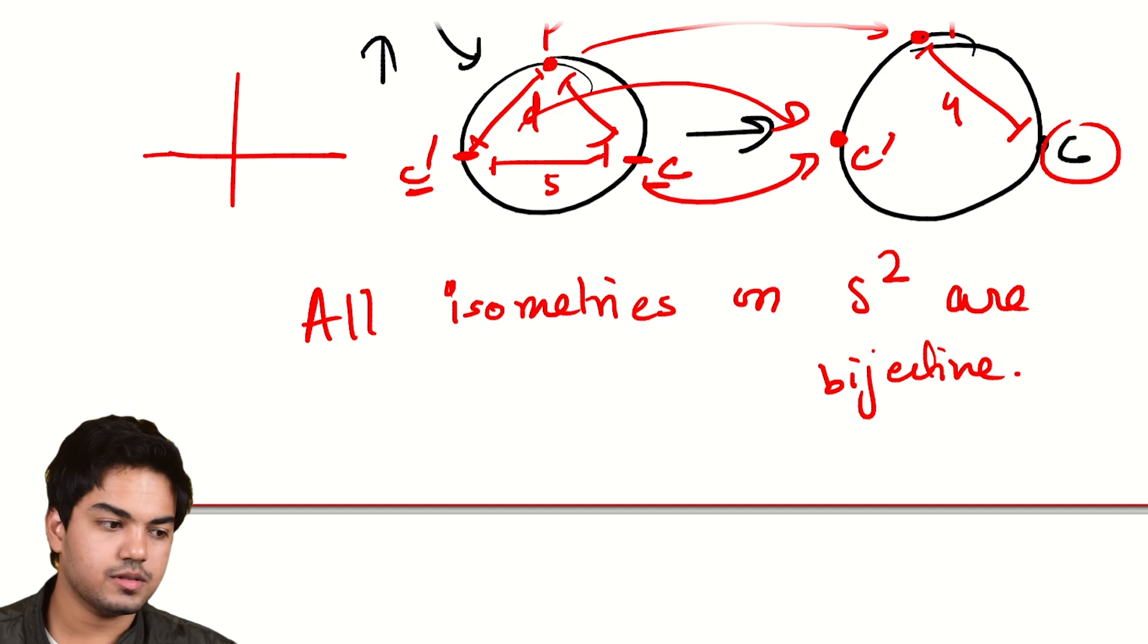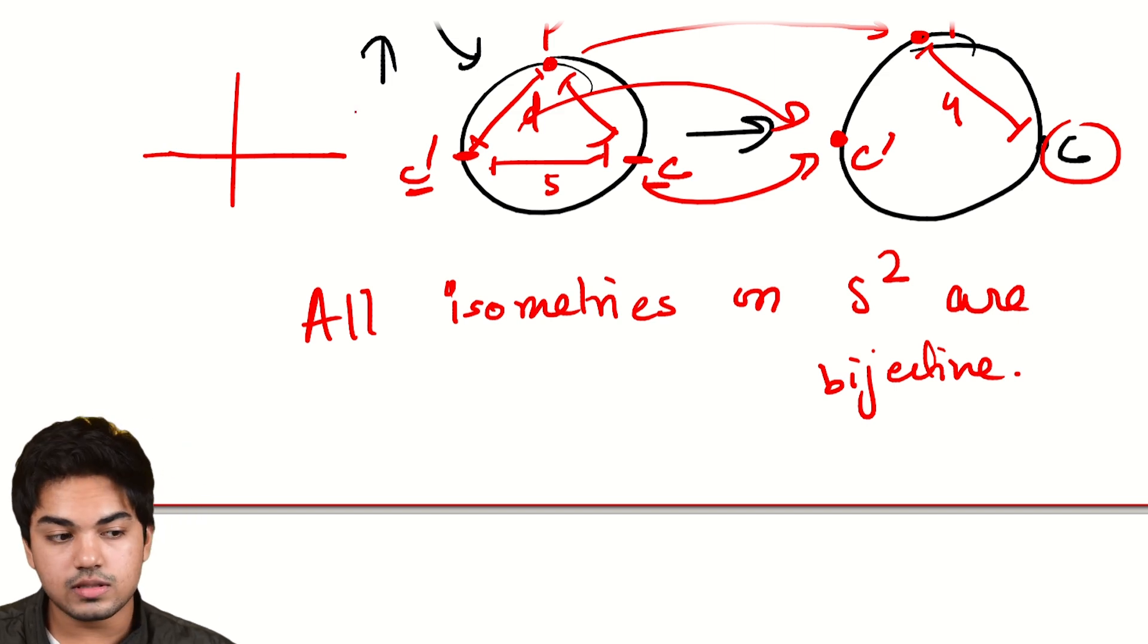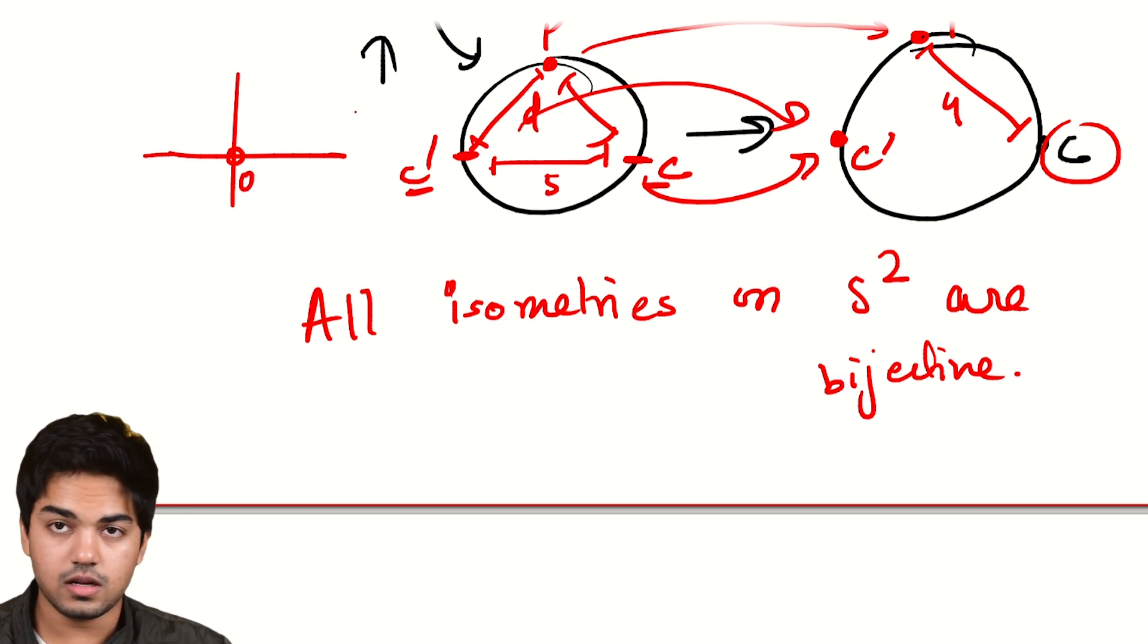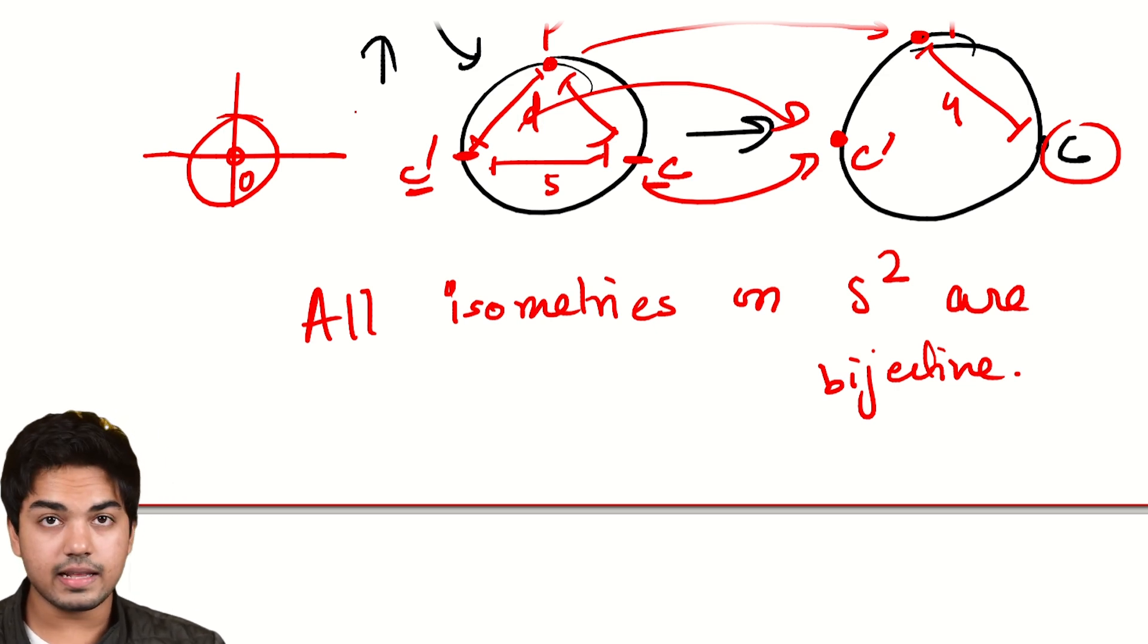So on a plane, for example, the same thing—it's almost the same argument will hold. You choose some point where the origin goes, blah blah. So you're seeing the same thing with circles, and circles will have to map to themselves, and the same argument will hold. So on the plane, the same result is true, that isometries are going to be bijective.